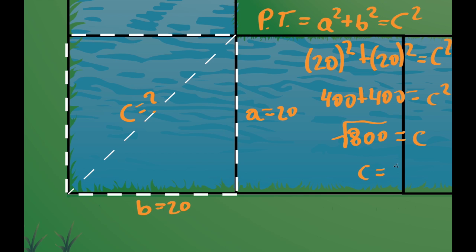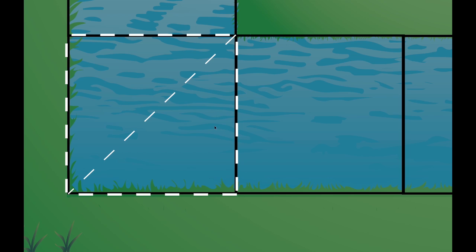So why is this important? Well, since we now know that c is 28.28, this means that the distance away from the bottom left corner of the outside of the moat to the inside of the moat is 28.28.